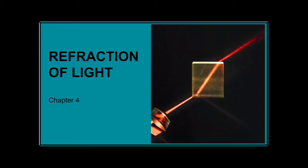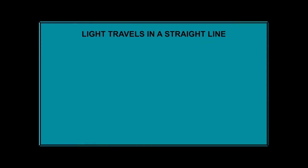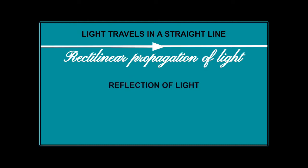This chapter deals with the property of light. The basic thing we know about light is that it travels in a straight line. This property is called rectilinear propagation of light. Due to this rectilinear propagation, light is able to reflect from a surface, and due to reflection of light rays, we are able to see things around us.